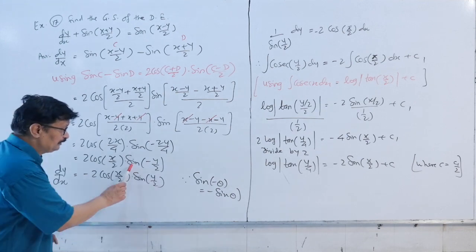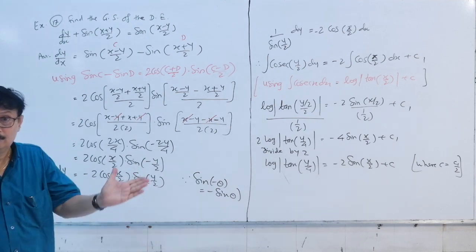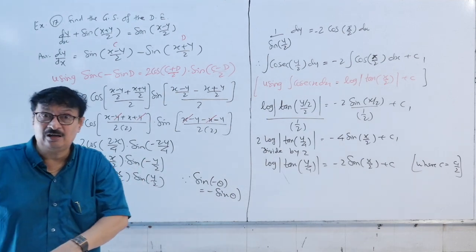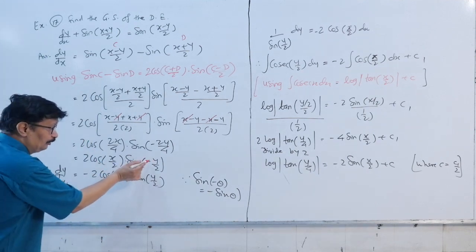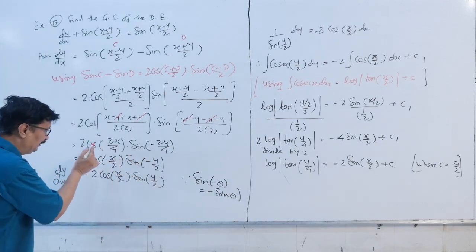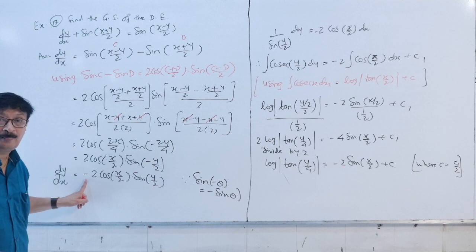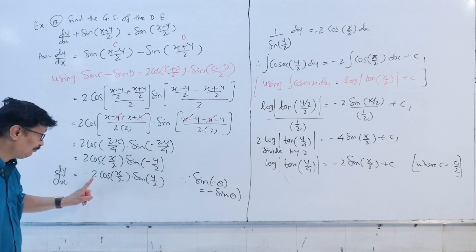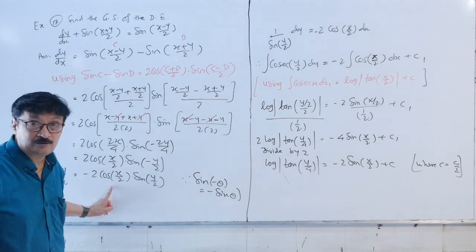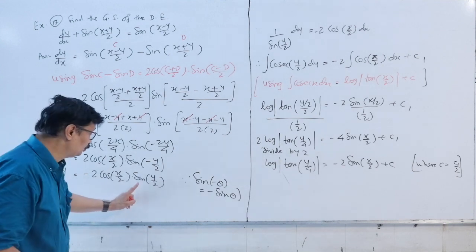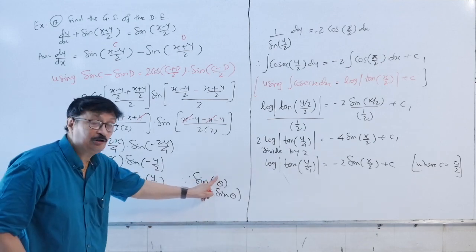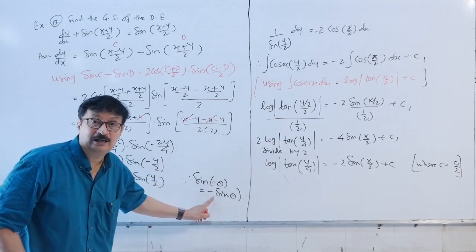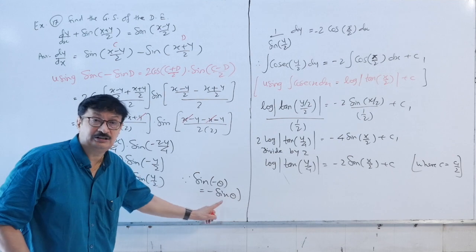Now, what is sin of minus theta? Minus sin theta — correct. So this becomes minus sin in the next step. Therefore dy/dx equals minus 2 cos(x/2) into sin(y/2), since sin(-theta) equals minus sin(theta).